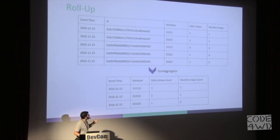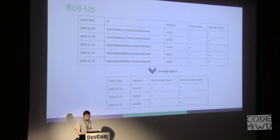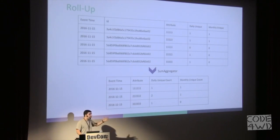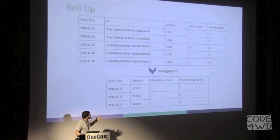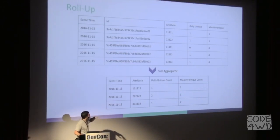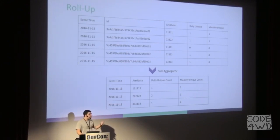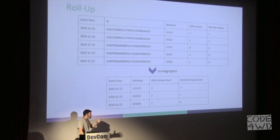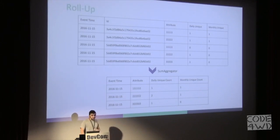Let's say I want to count the number of unique devices I have seen for each attribute. One approach would be to store the raw data in a traditional SQL database and perform the aggregations during query time — group by attribute and distinct count the number of unique devices to get how many unique devices I have for each attribute. The problem with this approach is that the aggregation is done at query time, so the query takes longer to complete.